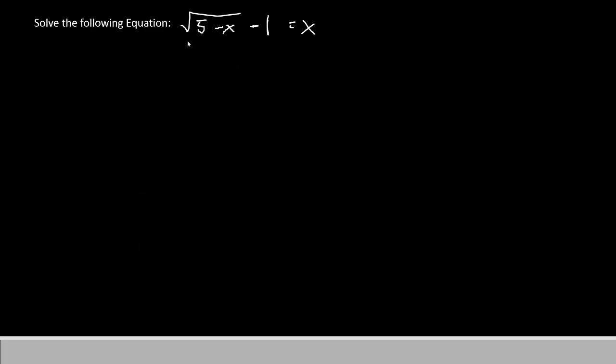Our equation today is root of 5 minus x minus 1 outside the root equals x. If you have an equation like this, the first thing you want to do is get everything that is not within the square root on the right side. We're going to move everything but the square root to one side.